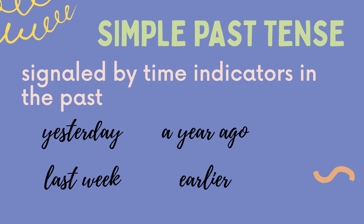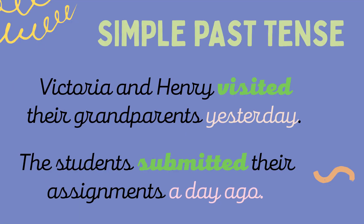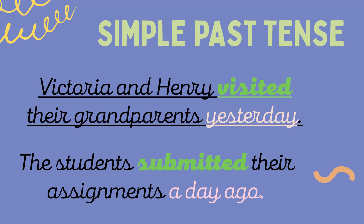The action or event already happened in the past. Now, if we see these words in a sentence, it means that sentence is in Simple Past Tense. For example, 'Victoria and Henry visited their grandparents yesterday.' Take note that there is the presence of the word 'yesterday,' which means it happened in the past. So our verb should be in Past Tense, which is 'visited.'